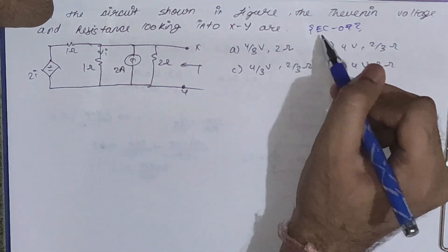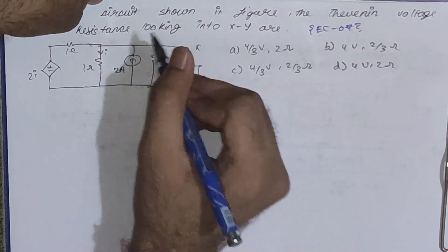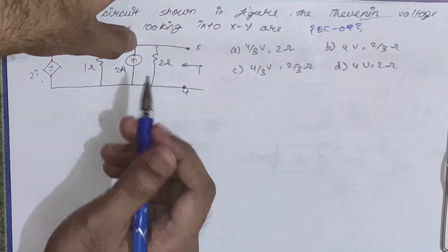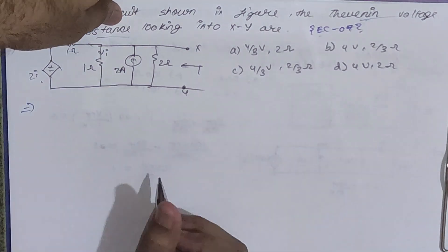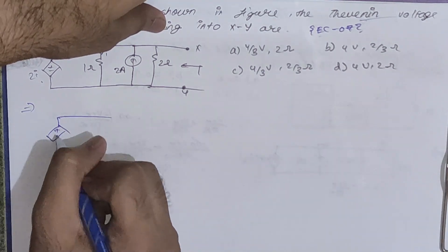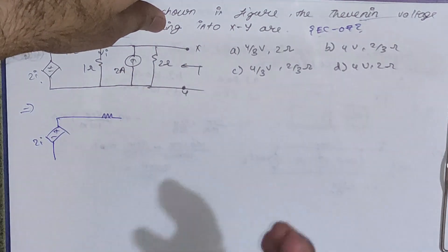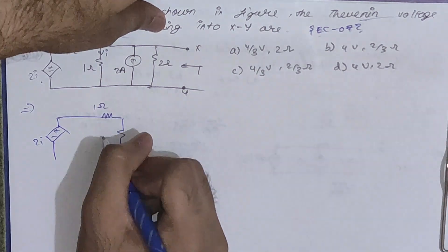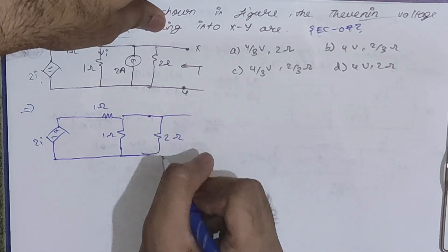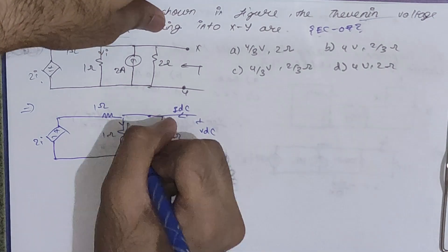The second sum is EC 2007: find the Thevenin voltage and resistance looking into terminals X and Y. This circuit has both a dependent source and an independent source, so it is a condition 2 problem. We assume Vdc across X and Y. We short circuit all independent voltage sources and open circuit all independent current sources — the 1 A source becomes open circuited.